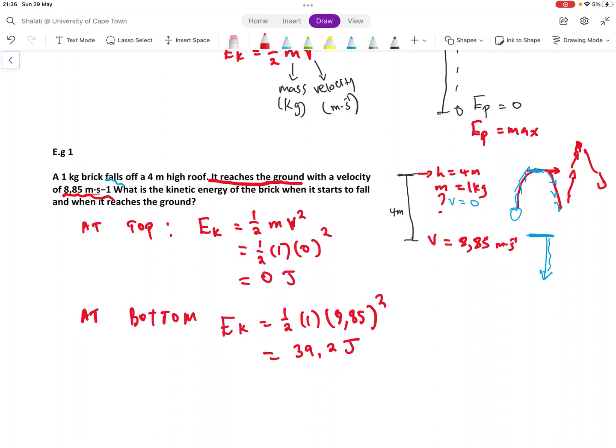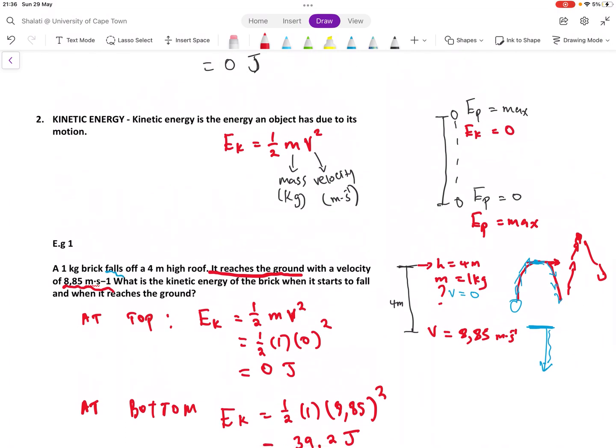Then you're going to get 39.2 joules. That is your kinetic energy at the bottom. So now you can see why this holds here. The kinetic energy at the top is zero, at the bottom, it's maximum. But the potential energy at the top is maximum, and it's zero at the bottom. That's why I said these are opposite of each other.